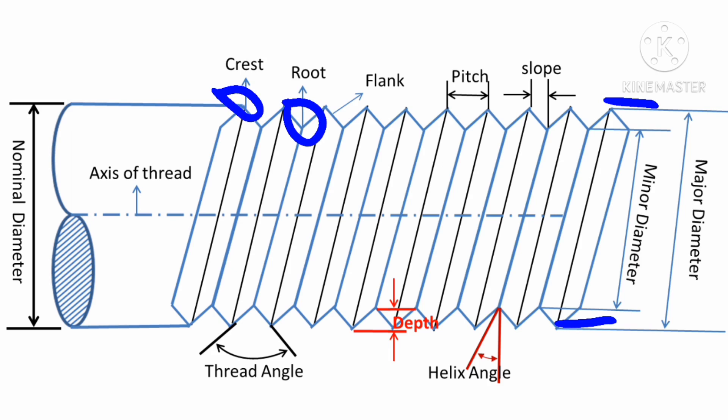The minor diameter is the minimum diameter of the external and internal thread. Whether it is external or internal thread, the definition remains the same — it is simply the minimum diameter of the external or internal thread, or you can say it is the distance between the two roots.